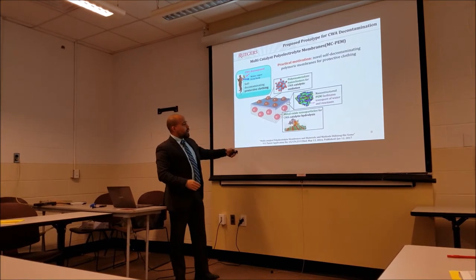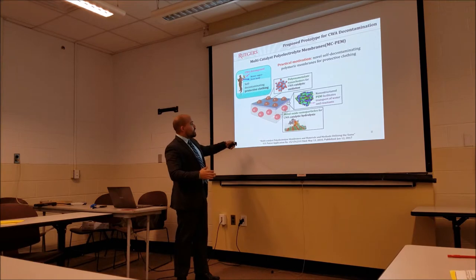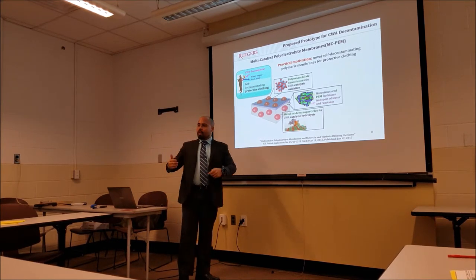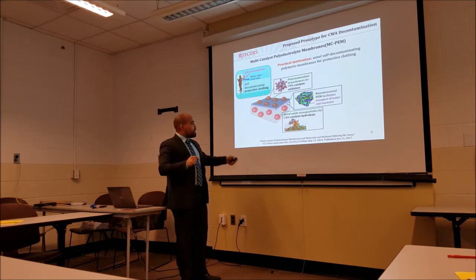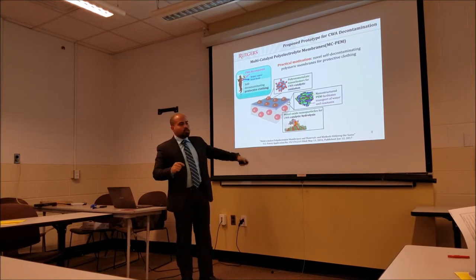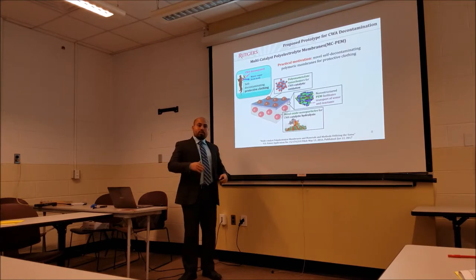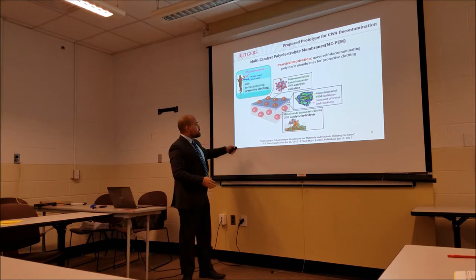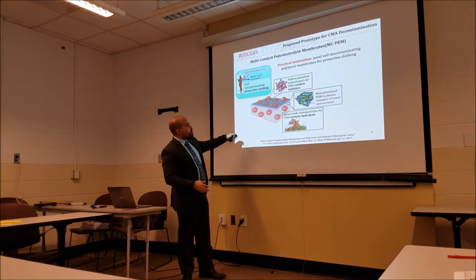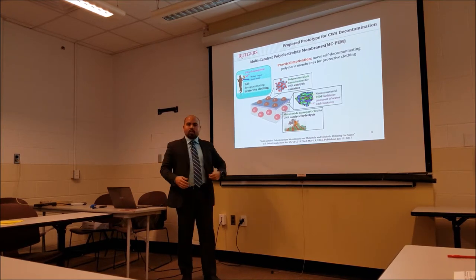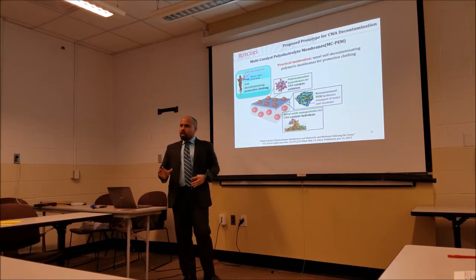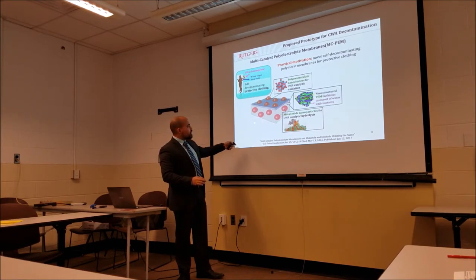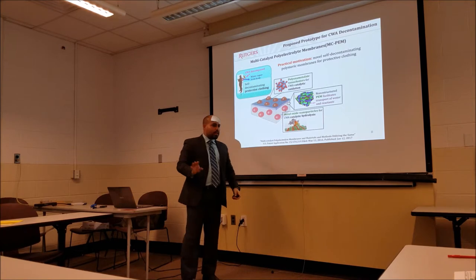Our research group proposed a multi-catalyst polyelectrolyte membrane to the Department of Defense. The material has two compartments, which we study separately to understand how each component works before combining them. The first layer is the hydrolytic layer, where we incorporate Nafion membranes and grow metal oxide nanoparticles inside the Nafion substrate, since metal oxides are known to provide catalytic hydrolysis for nerve agents. The second layer is the oxidative layer, containing polyoxometalate nanoclusters, which provide catalytic oxidation and photo-oxidation.